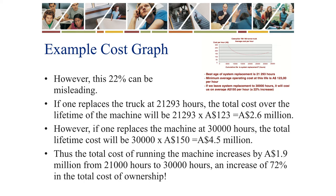Thus the total running cost of the machine increases by 1.9 million Australian dollars from 21,000 hours to 30,000 hours — an increase of 72% in the total cost of ownership. This shows how critical it can be to replace units at their optimal frequencies, and how misleading a cost per time unit can be for comparison.